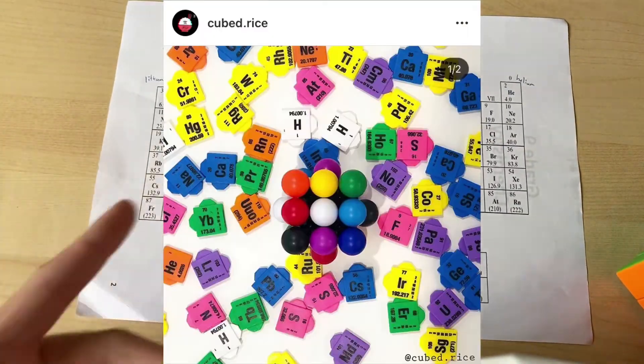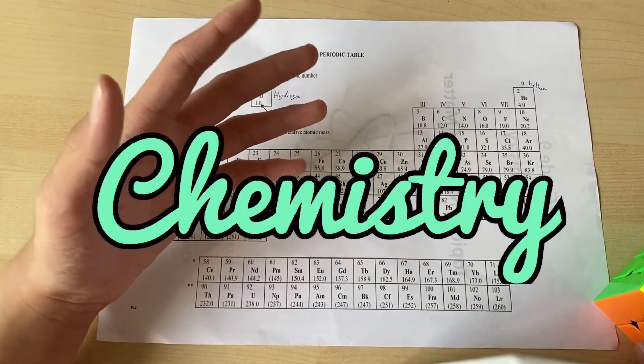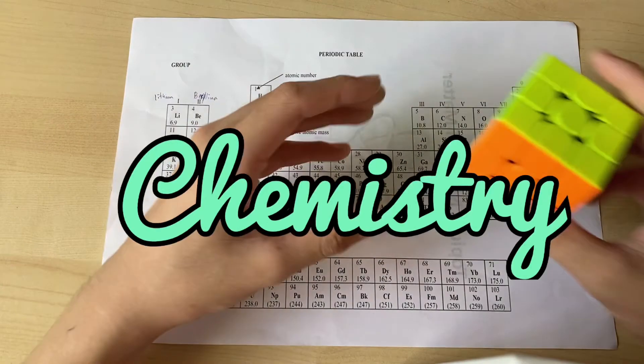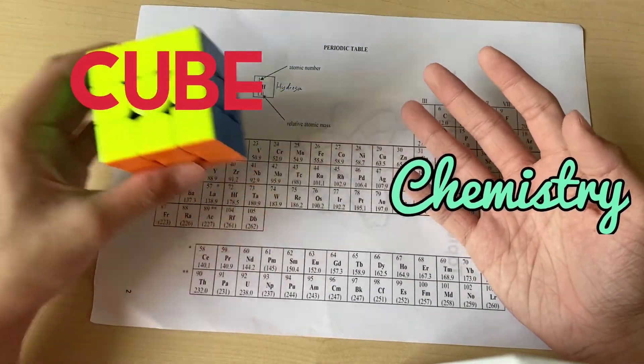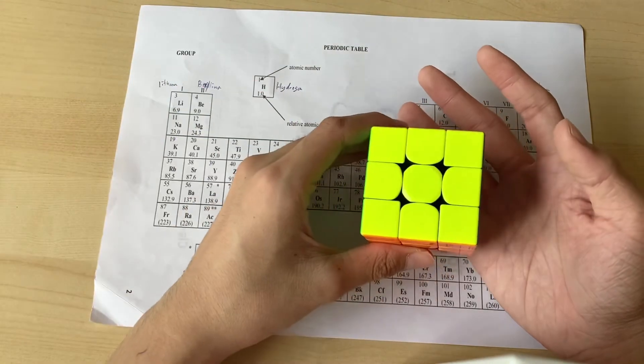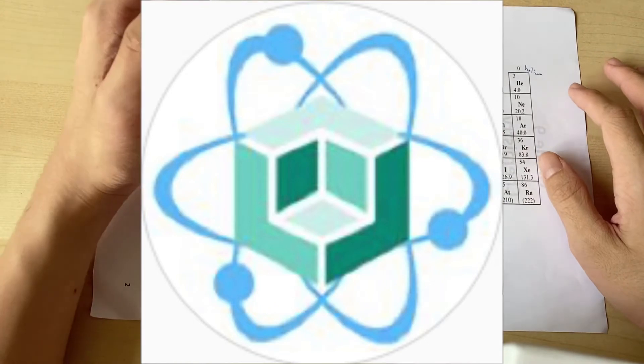So what do we think about when you see the periodic table? We think about chemistry, right? So if I have a cube and if I have chemistry, then oh, what do we have? Cubistry! Yes, today we are going to be talking about cubistry.